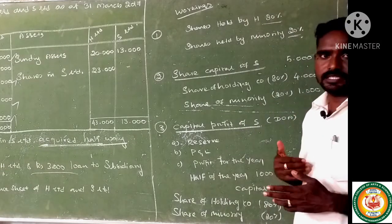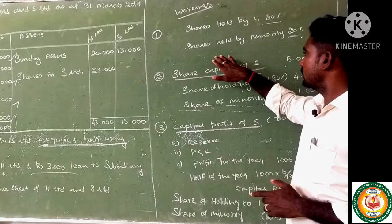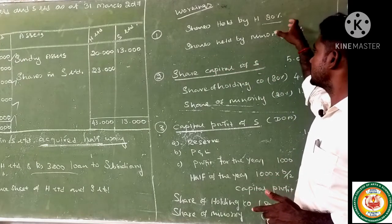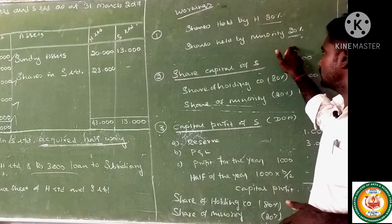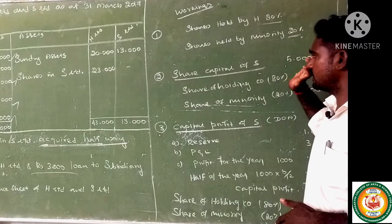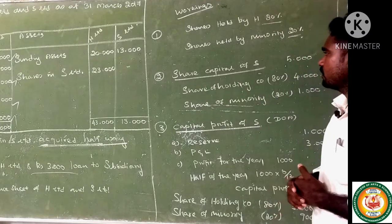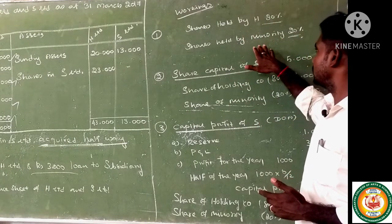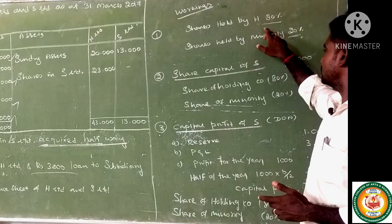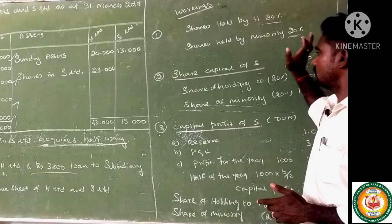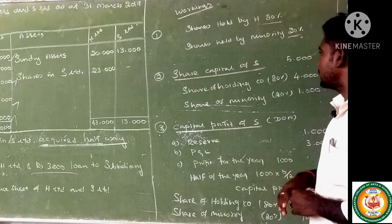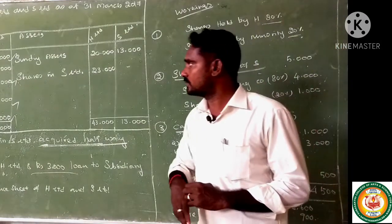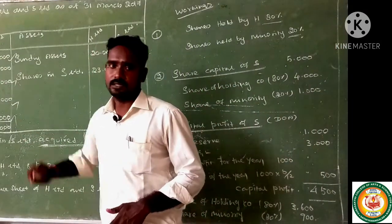Who are the subsidiary company? Because HL holds 80% of shares in S Limited, S Limited is said to be the subsidiary company. The remaining 20% shares are held by the minority. S Limited's share capital is a total of 5,000.